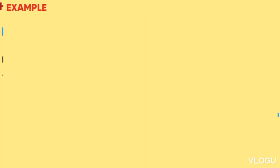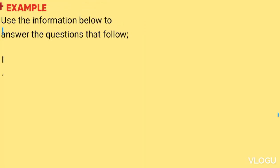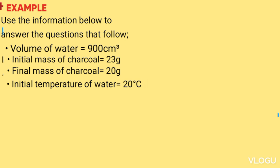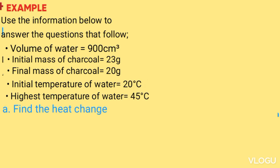We take an example. Use the information below to answer the questions that follow. Volume of water 900 cm³, initial mass of charcoal 23 grams, final mass of charcoal 20 grams, initial temperature of the water 20 degrees Celsius, highest temperature of the water 45 degrees Celsius. Part a: Find the heat change. Given density equals 1 gram per cm³, C equals 4.2 kilojoules per kg per kelvin.